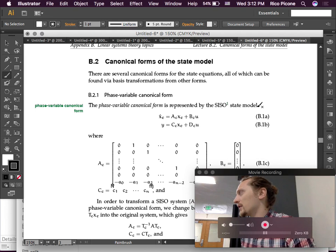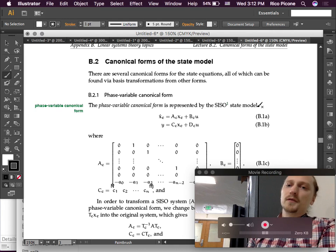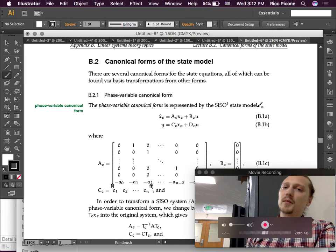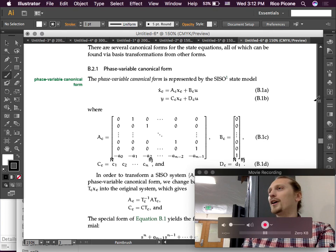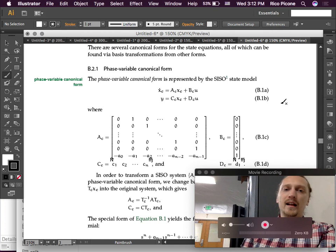So, this canonical form of the state-space model is something that we haven't talked about before, so I wanted to make sure that we went back and looked at it. There are several canonical forms for the state equations, all of which can be found via basis transformations from other forms. The phase variable canonical form is the one that we're going to need for this state-space controller design.